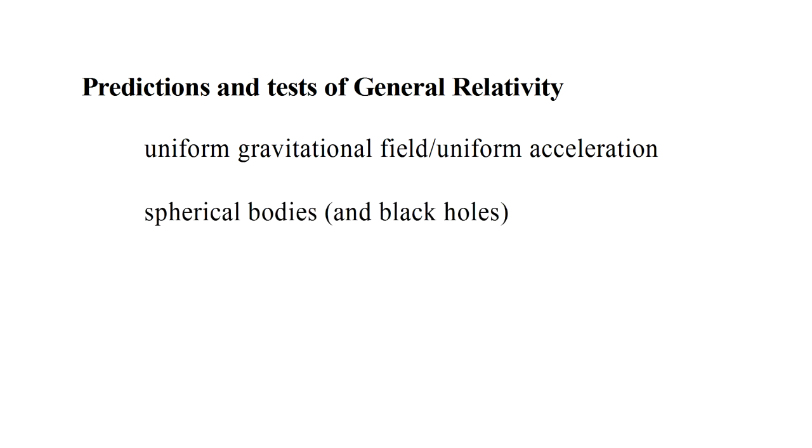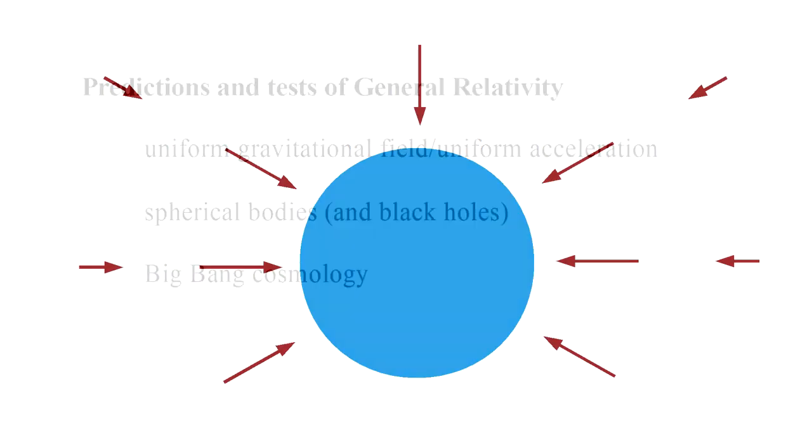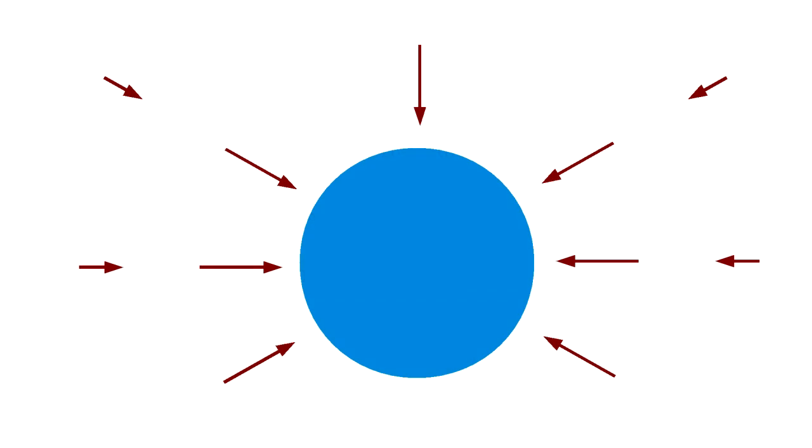Welcome to video 10 in this series on the general theory of relativity. In our three remaining videos, we're going to look at the predictions of the theory that we've been developing, and also at tests that have verified many of those predictions. In the present video, we'll explore the ideal case of a uniform gravitational field, or equivalently of an observer undergoing uniform acceleration. In the next video, we'll deal with spherical bodies and black holes.